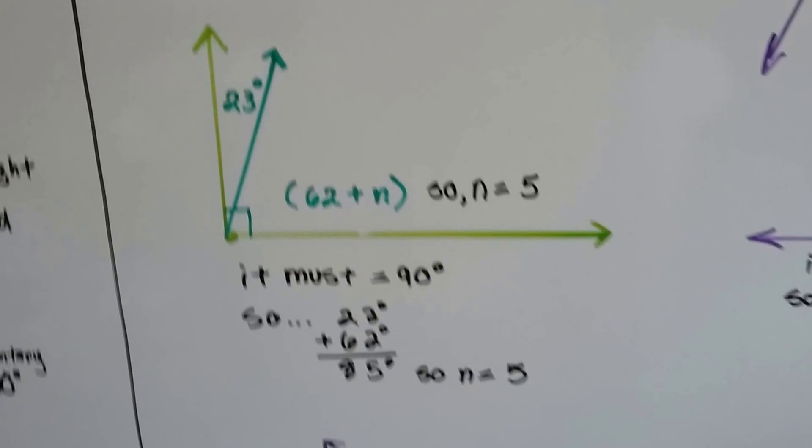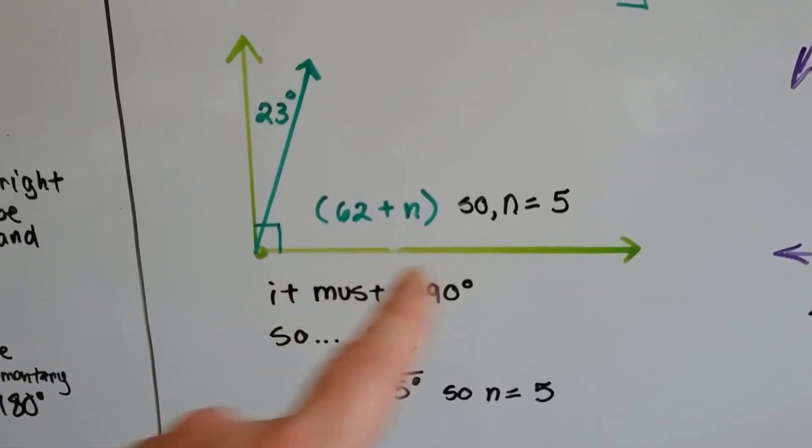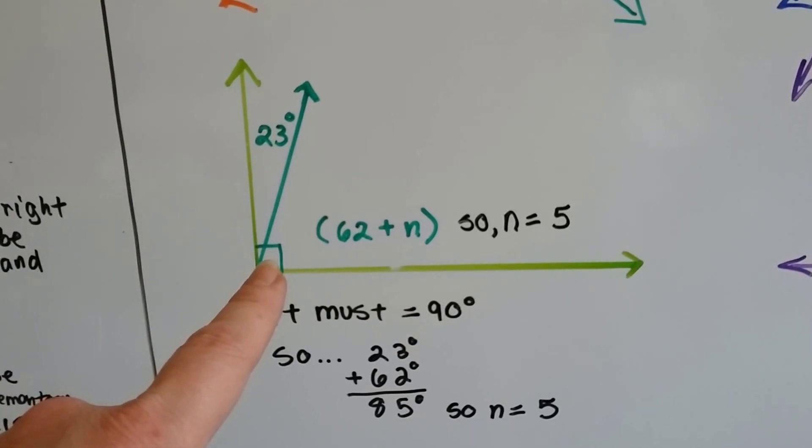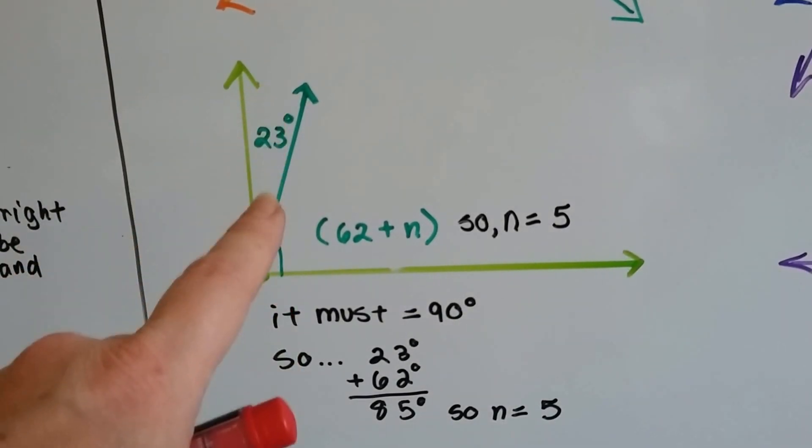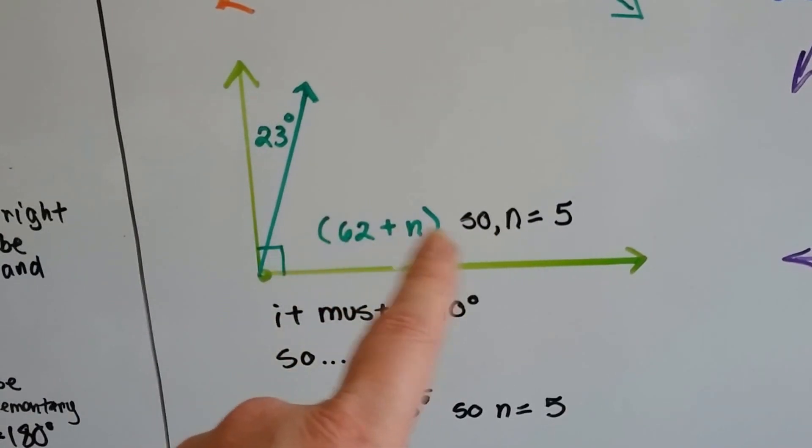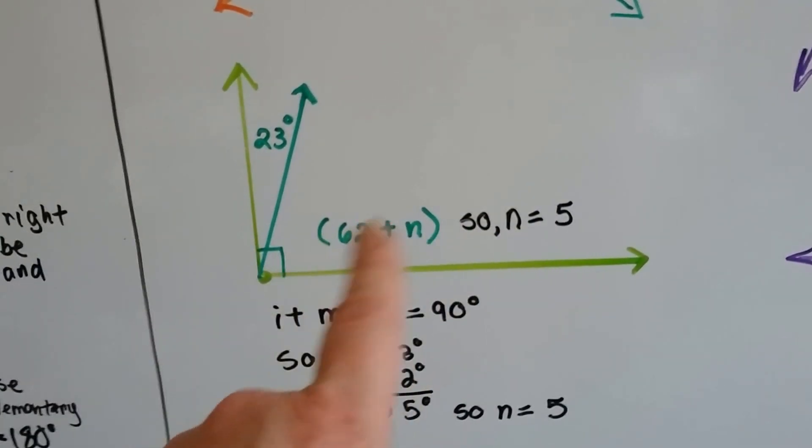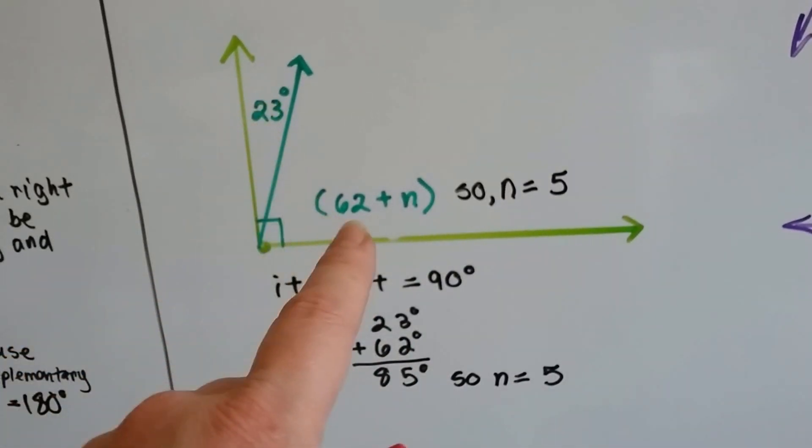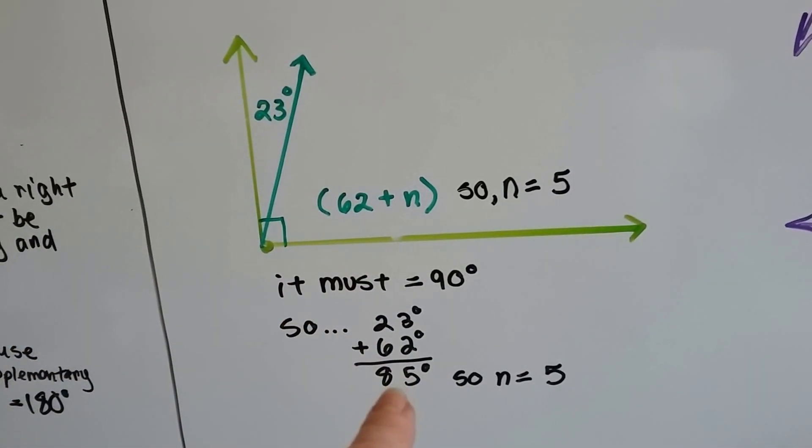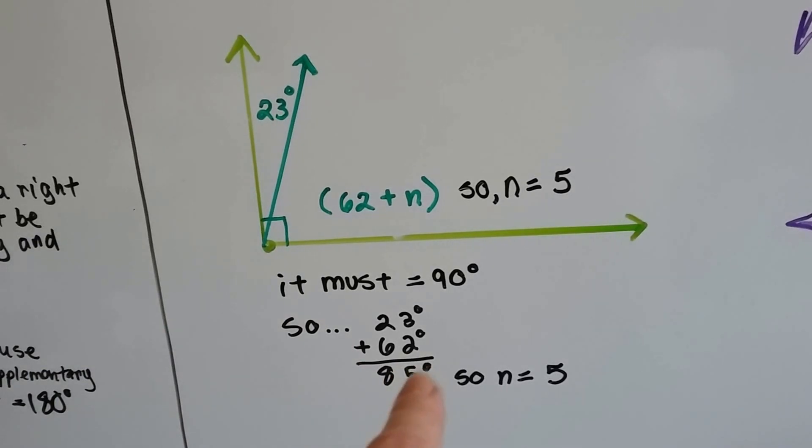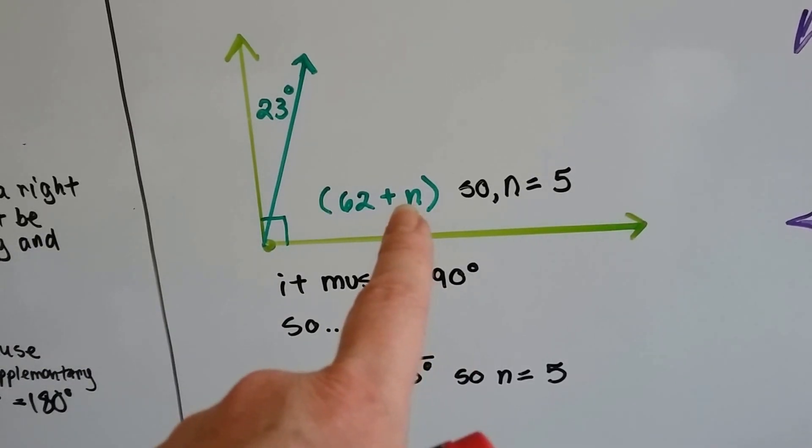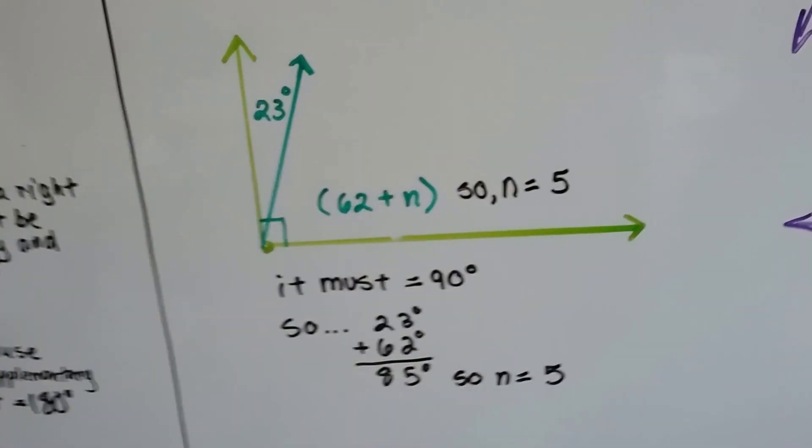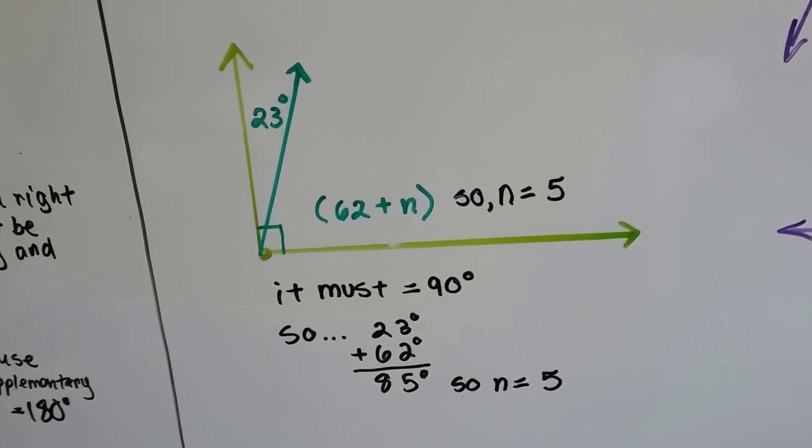What if we have a problem like this? We know this is a 90 degree angle because we see the box here. And if this is a 23 degree angle, and this one says it's 62 plus n, what could it be? Well, it must be 90 degrees. So we add the 23 and the 62 and we get 85. And we know it needs 5 more to be 90. So we know the n must be 5 because 62 plus n plus the 23 is got to be 90. Does that make sense?